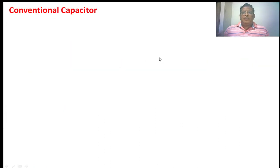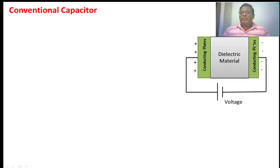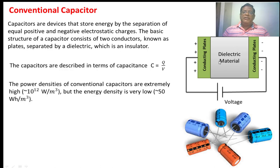The conventional capacitor is defined when two opposite charges are separated by the electric media. Here we have two conducting plates with an electric media between them. When we apply positive voltage, positive charge accumulates on one plate and negative charge on the other. Because of the electrostatic field, some amount of energy is stored in the capacitor. Capacitance is defined as charge per voltage. The power density of this capacitor is extremely high, approximately 10 to the power of 12 watts per meter cube, but energy density is very low, that is 50 watts per meter cube.